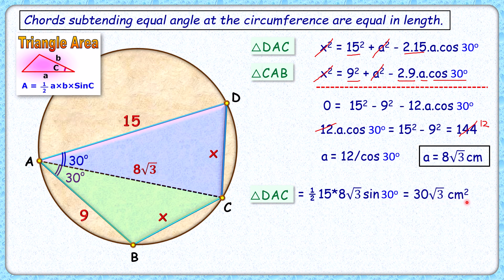In the same way, the area of the yellow triangle is ½ × 9 × 8√3 × sin 30°. Putting sin 30° as ½, we get 18√3 cm².